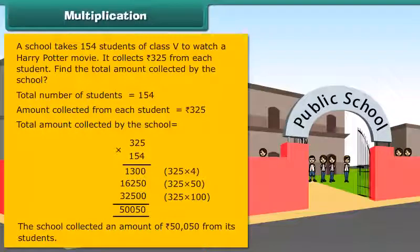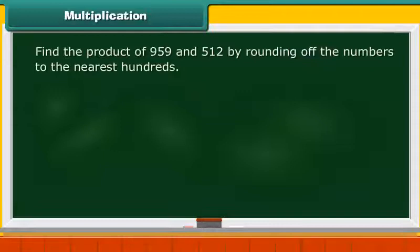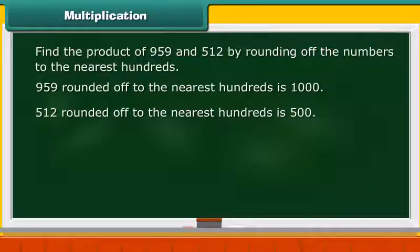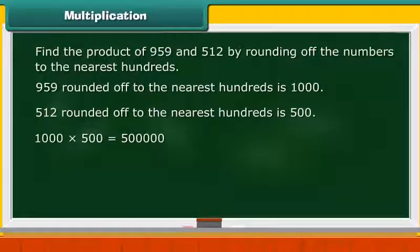Now, let us estimate the product of two numbers. Find the product of 959 and 512 by rounding off the numbers to the nearest hundreds. 959 rounded off to the nearest hundreds is 1000. 512 rounded off to the nearest hundreds is 500. 1000 into 500 is equal to 5 lakh.